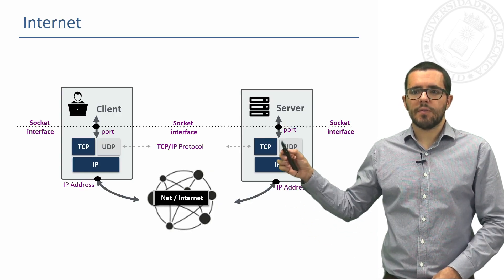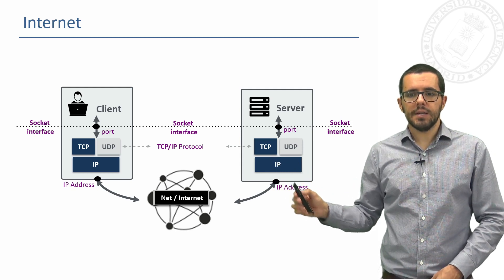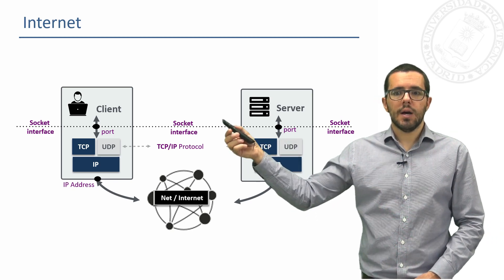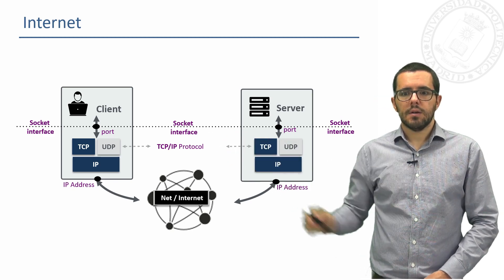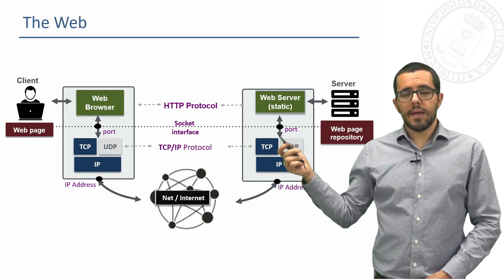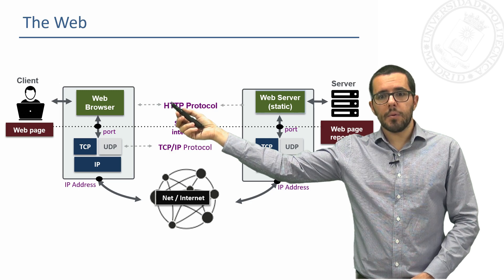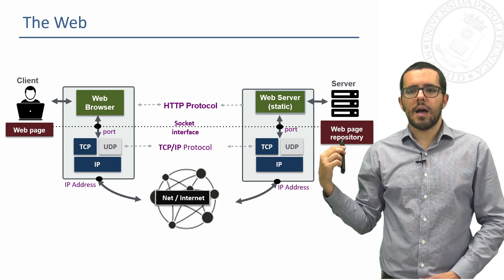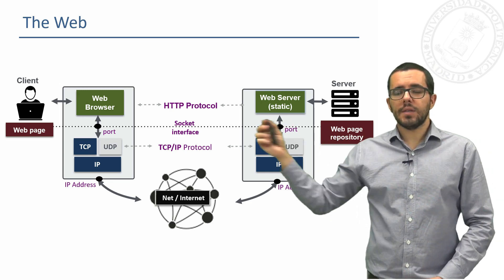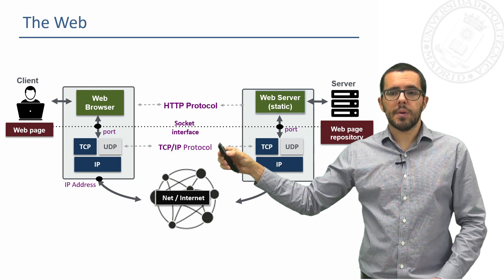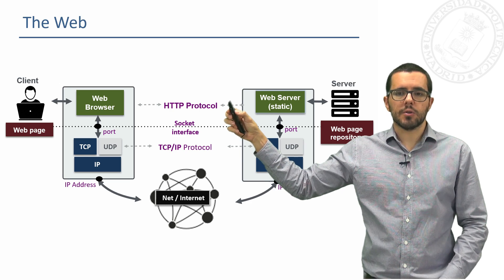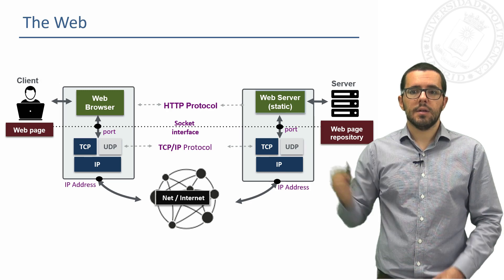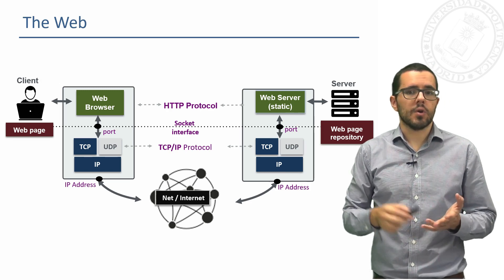Internet works like this. We have the TCP/IP protocol with the IP address of the server and of the client, and we also have the port just to establish the communication through a socket interface. Then for the web, we add as a client the web browser and as a server a static web server with a web page repository. And to interchange the information on this TCP/IP protocol we use HTTP protocol. So the browser will use HTTP protocol to request a web page, a CSS, a photograph, a video, or whatever.